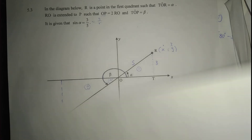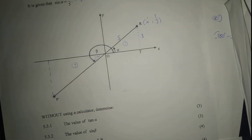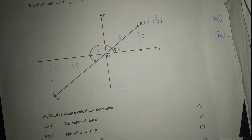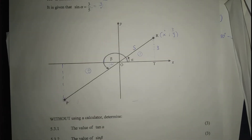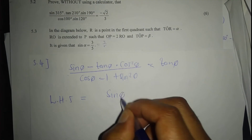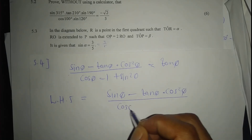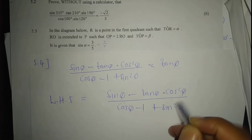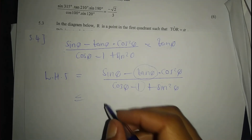For 5.4, prove the identity: sin theta times cos² theta divided by (cos theta minus 1) plus sin² theta equals... this is an identity. So: sin theta minus tan theta — which is sin over cos theta — multiplied by cos² theta equals cos theta minus sin² theta plus sin² theta equals cos theta, which is 1 by the Pythagorean identity.